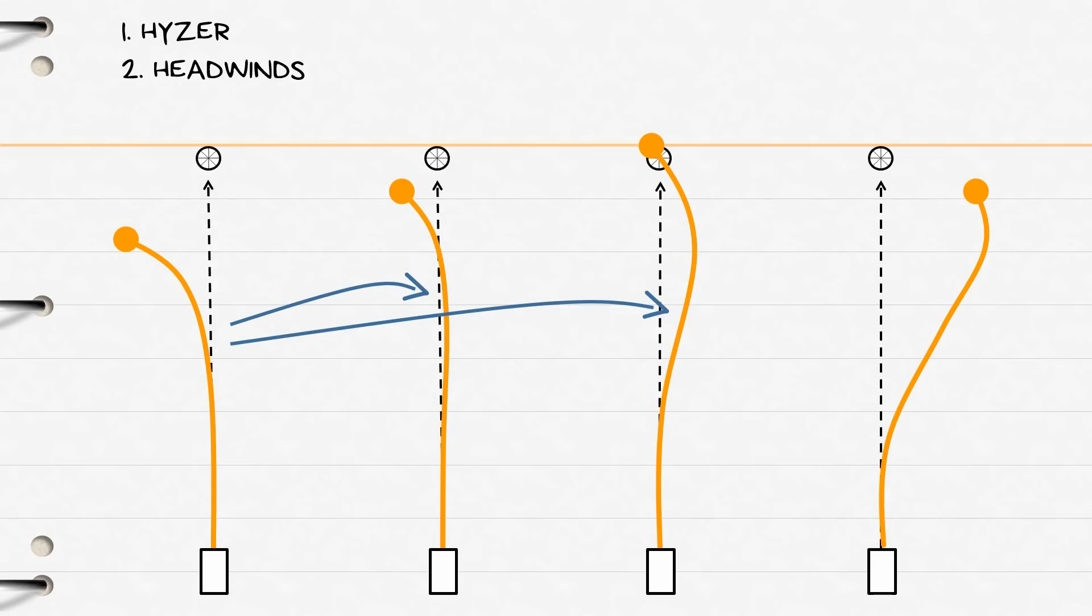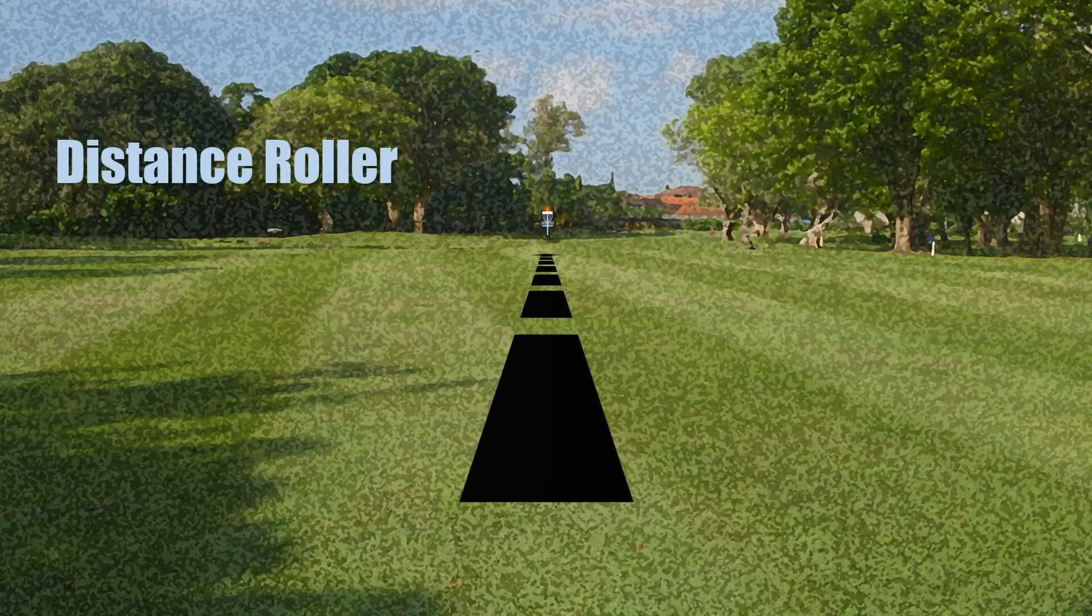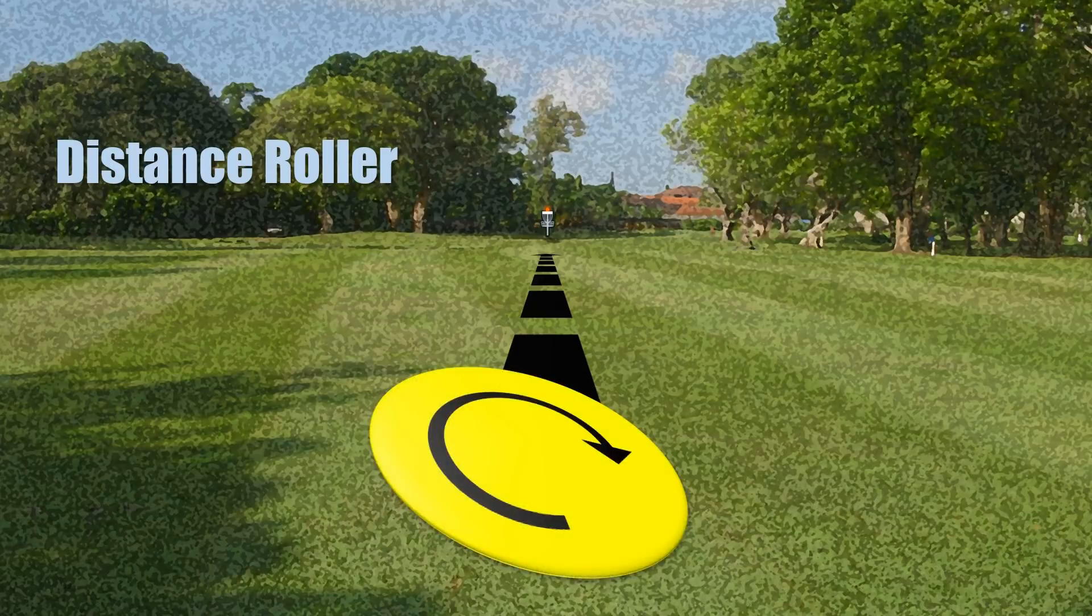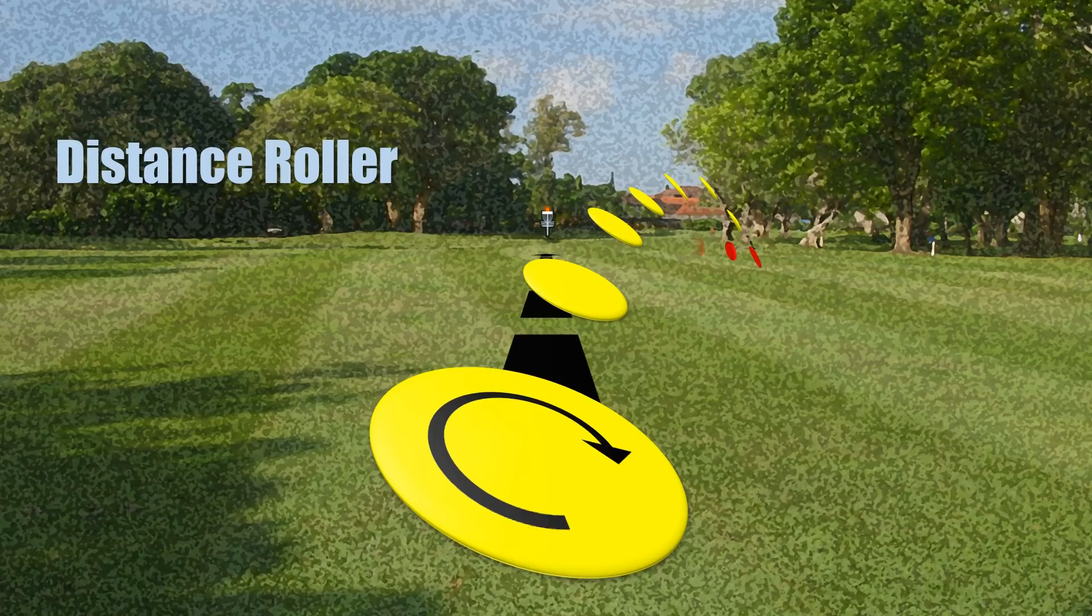On the opposite end of the spectrum your understable discs make an excellent choice for anhyzers where its natural pull to the right will help it hold an anhyzer angle for as long as possible. A second great option for understable discs are distance rollers. For a distance roller the disc's strong tendency to turn over combined with an anhyzer release will cause the disc to turn all the way over landing on its side and rolling for a very long way toward the basket.